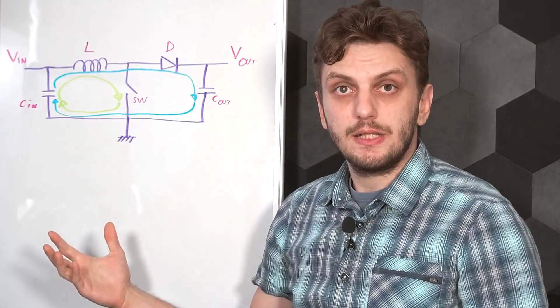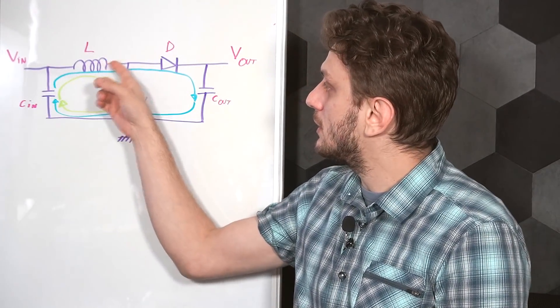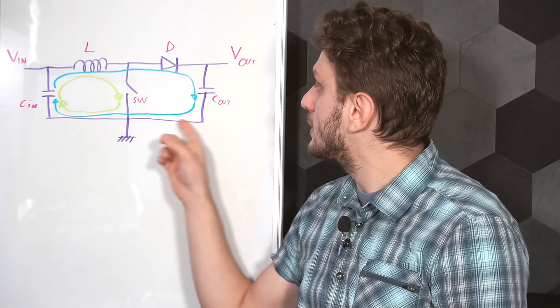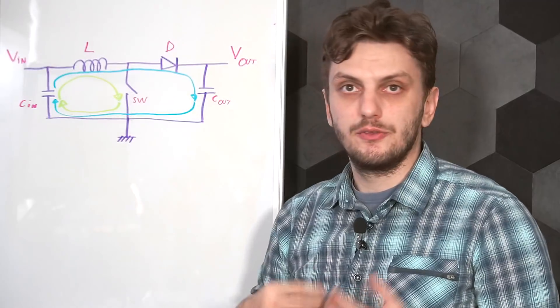And in the second cycle we get current from the input capacitor, through the inductor, through the second switch which is usually a diode, and then closing through the output capacitor and back through ground.